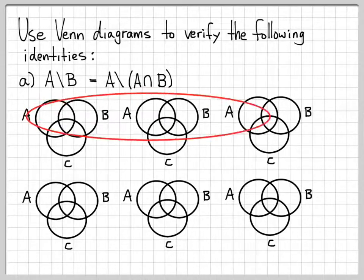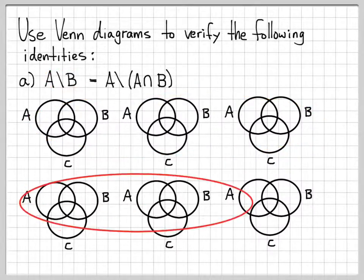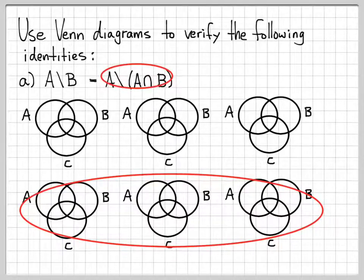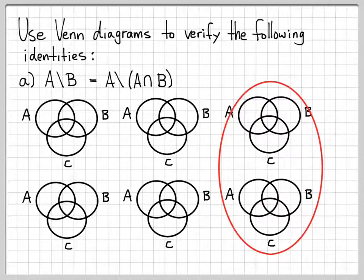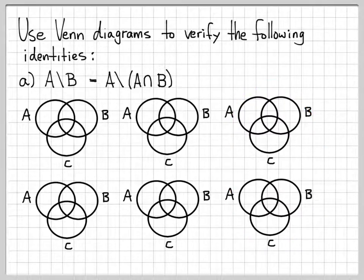So I'm going to make a sequence of Venn diagrams for each of these quantities. Up here, I'm going to use these three Venn diagrams to take care of sketching this. And then down here, I'm going to use these three Venn diagrams to sketch a Venn diagram for this set. And then when I'm done, these two Venn diagrams over here will be the same, and I'll have convinced myself that this identity is indeed true.